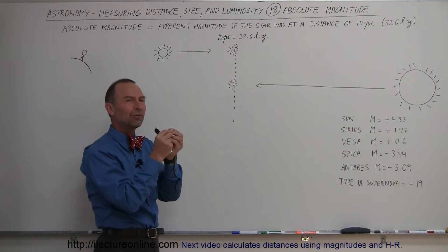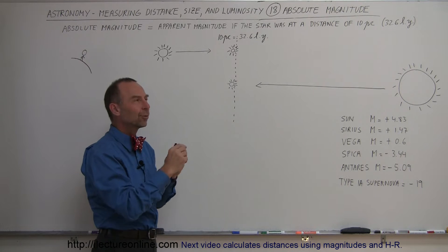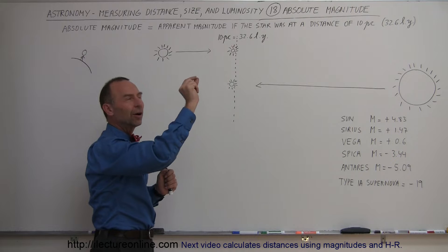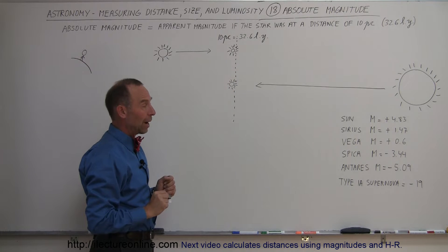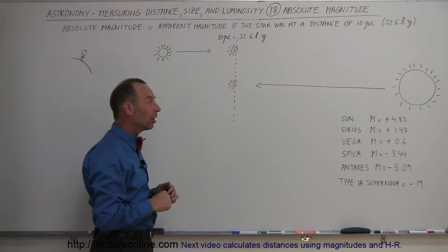Remember, plus 6 was the limit of our ability to see a star with the naked eye. So it would be a very, very, very dim star, way out there, barely visible. Wow, so the sun isn't that particularly of a bright star.